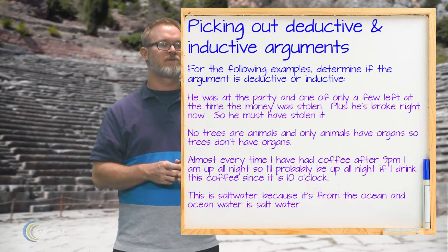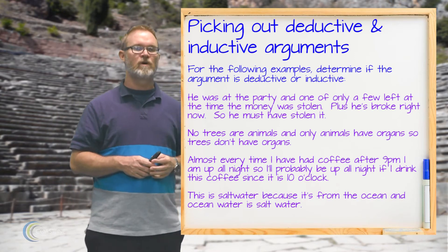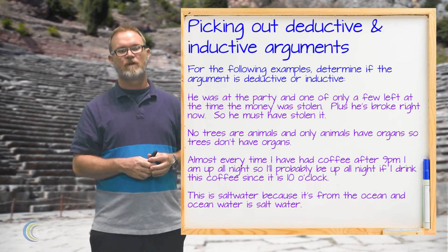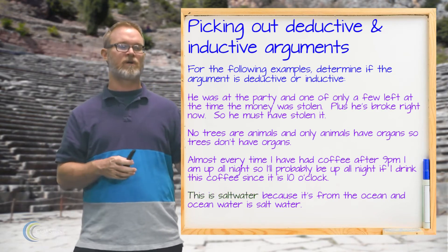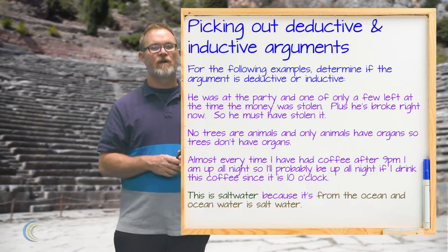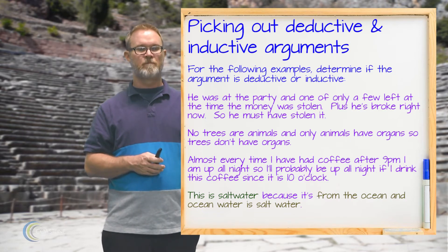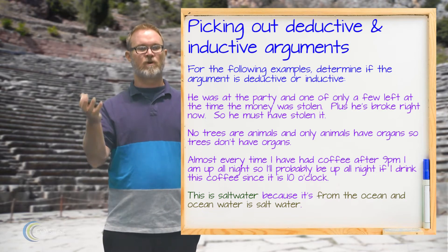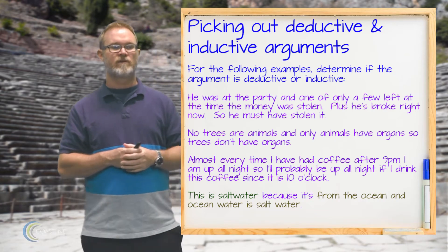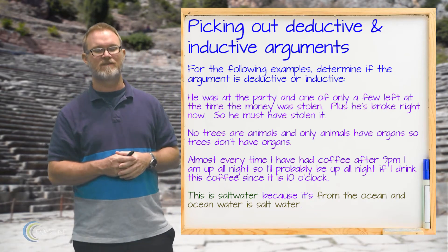Next: this is salt water because it's from the ocean, and ocean water is salt water. This is a deductive argument. The conclusion is that this is salt water, and the reasons are that it's from the ocean and ocean water is salt water. If this water is from the ocean and ocean water is salt water, then it has to be salt water — that conclusion necessarily follows, making it deductive.